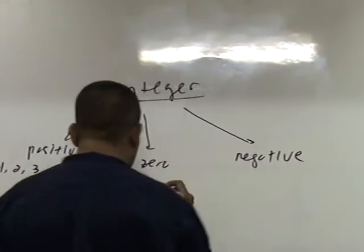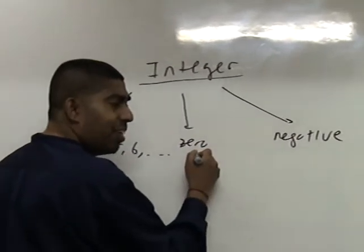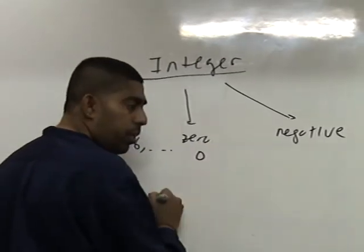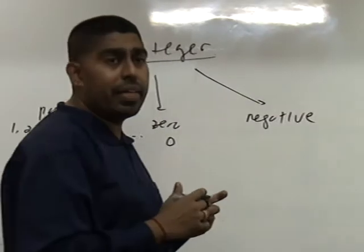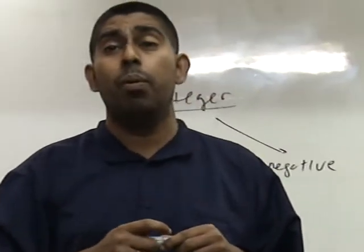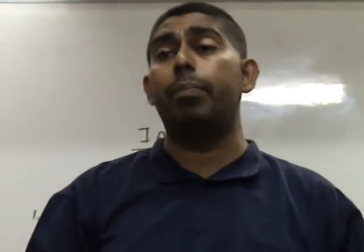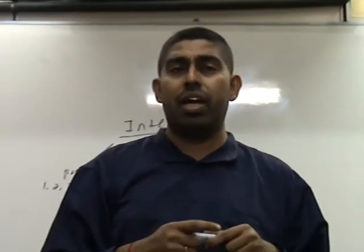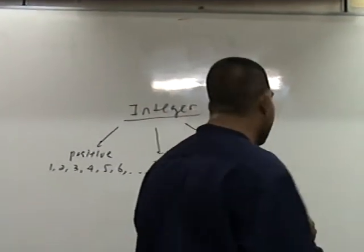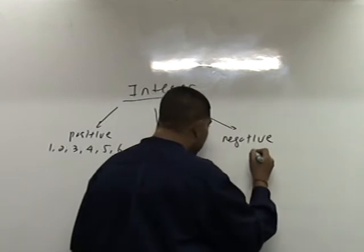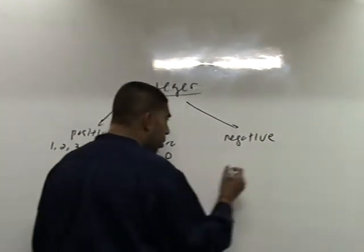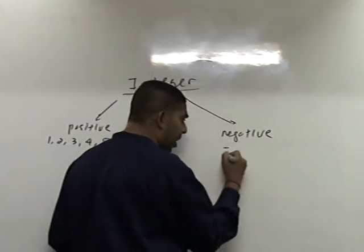Zero, you know zero, which is sifar, kosong. Alright? Negative integer, especially for Form 1 students, you are just learning this because previously you didn't know what negative numbers are. Now you will learn that there is something called negative integer. So negative integer here means it's the same as positive integer, but with a dash in front.